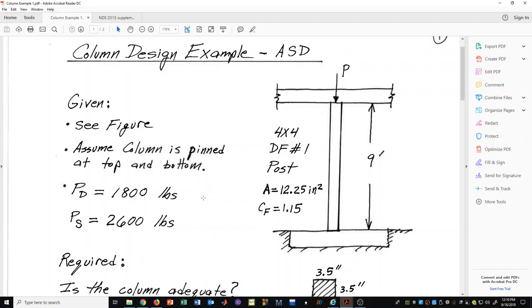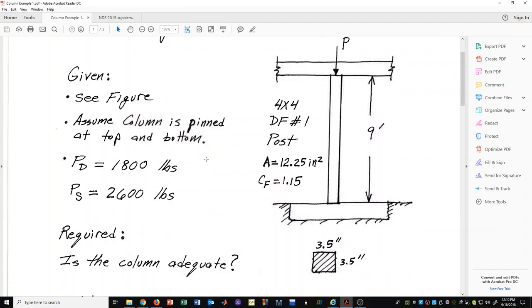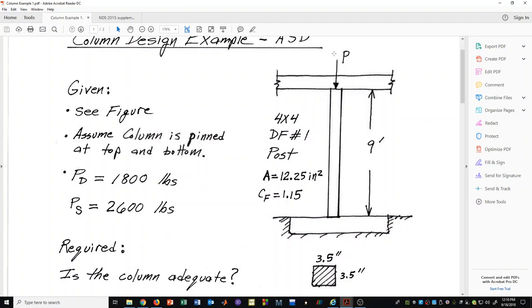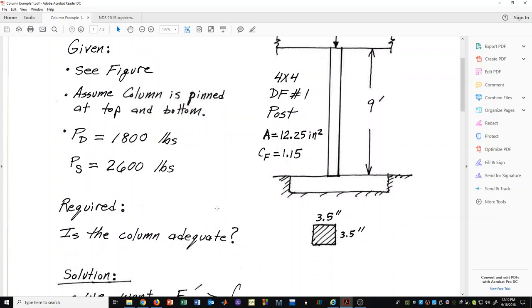For this particular problem we're assuming some loads just to do an example. Here we have a dead load that is contributing to the total load applied at the top of the column and that dead load is 1,800 pounds. We also have a snow load which is 2,600 pounds. We are required to see if the column is adequate according to the allowable stress design procedure.